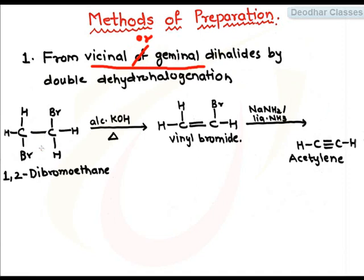The example given is that of vicinal dihalide. It is 1,2-dibromoethane. When 1,2-dibromoethane is heated with dehydrohalogenation agent like alcoholic potassium hydroxide, it will lose KBr and OH will take up one H.